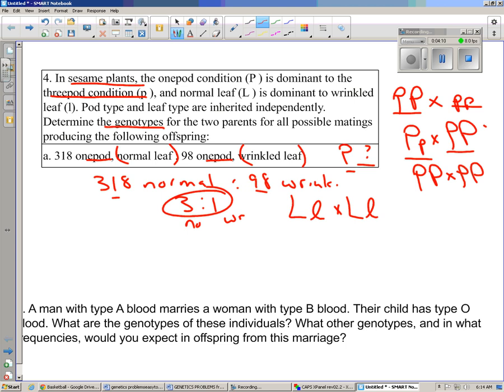Then we could say that one parent is for sure big P, big P, big L, little l. For sure. If you look up here, one of the parents had to be that.